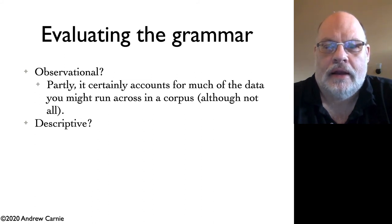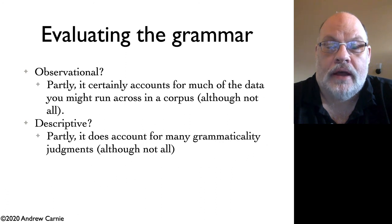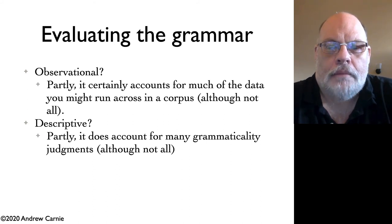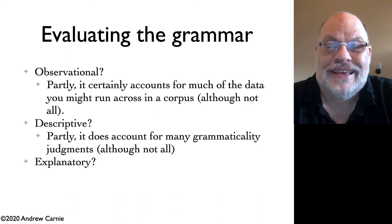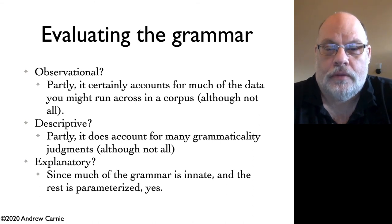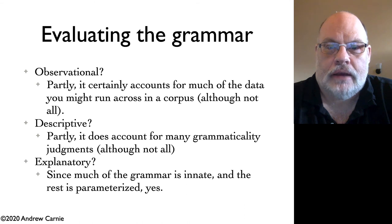We can ask if it's descriptive. Descriptive means it accounts for the data out there in the world and native speaker intuitions. It probably does better on this than you might expect — it accounts for many of the grammaticality judgments people have, though we haven't done more than scratch the surface of grammatical phenomena in this course so far. And then the third criterion is, is it explanatory? Since much of the grammatical system we've been talking about is meant to be innate — for example, the X-bar rules themselves are thought to be innate, and the constraints like the case filter and the binding constraints are thought to be innate, built in.